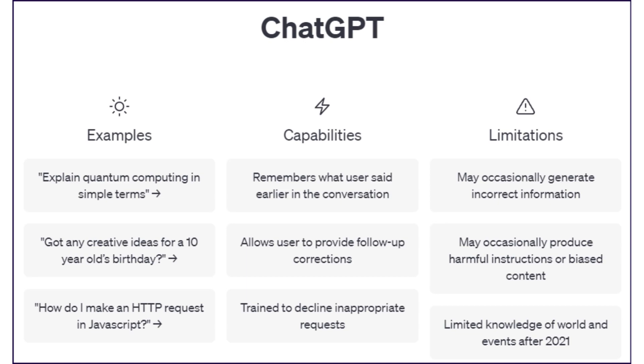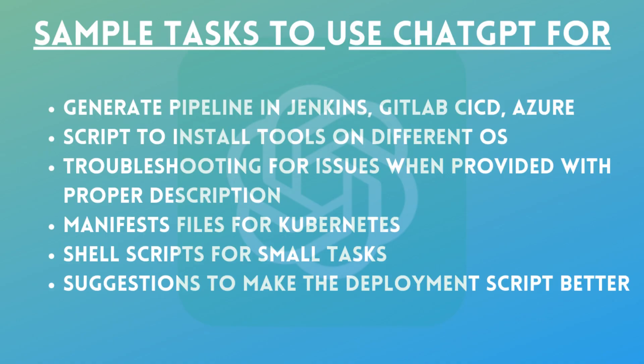Similarly, if we want to build and deploy an application through Jenkins, we can ask ChatGPT to generate a Jenkinsfile. If we then want that same pipeline deployed using GitLab CI/CD runner, we can ask ChatGPT to convert the Jenkinsfile to a CI/CD YAML file. There are also other use cases like installing Kubernetes clusters, writing scripts with specific requirements, or automating tasks — all can be done with ChatGPT.